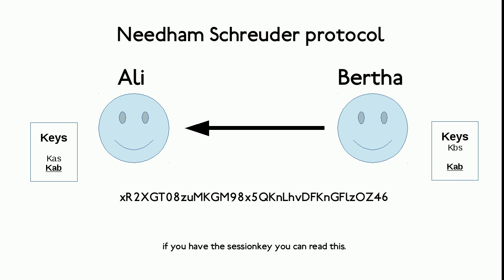Bertha now contacts the person mentioned in the message she just received. Note that an impersonator who would have replayed the message to Bertha would not be contacted, as the message doesn't contain his address. But in our example, Ali is contacted and fully expects to be.